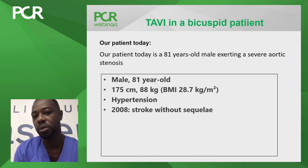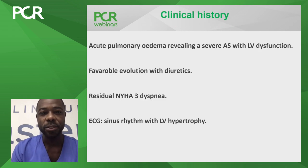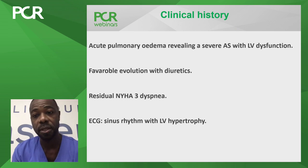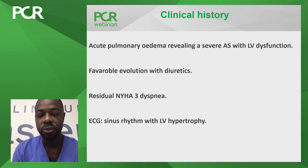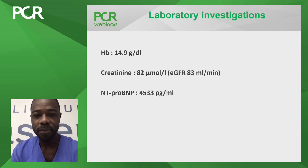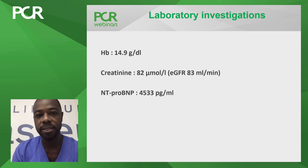The patient had no recurrence of pulmonary edema but remained symptomatic at NYHA class 3 dyspnea, responding initially to diuretics. ECG showed sinus rhythm with signs of left ventricular hypertrophy. Laboratory findings were notable for a very high pro-BNP level above 4000 pg/mL, with normal creatinine clearance and renal function.